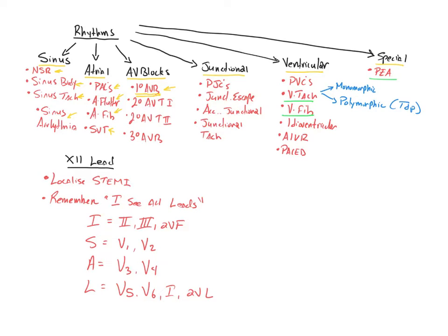All the rest of the heart blocks are considered rhythms to themselves. You've got your second-degree AV block, type 1, also known as a Mobitz 1 or Wenckebach, whatever term you choose to use. Then you have the second-degree AV block, type 2, also known as a Mobitz 2. And then you have your third-degree AV block, also known as a complete heart block.